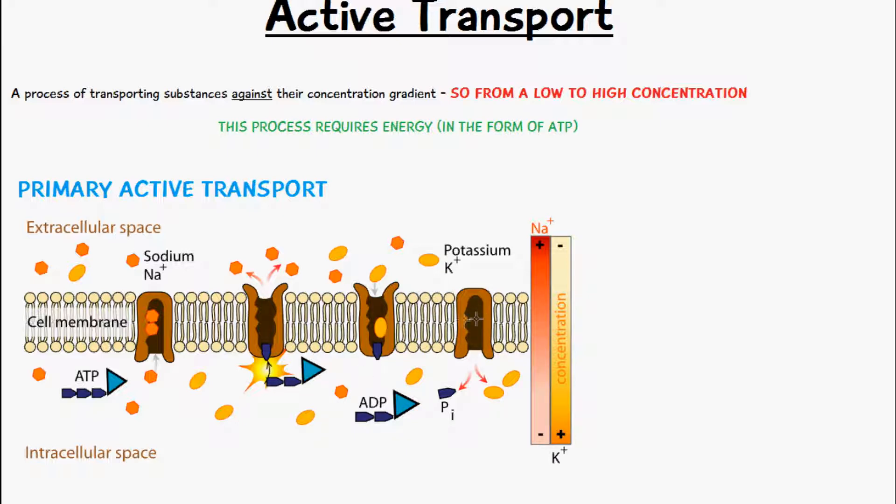When we're talking about active transport using this example, we have this pump here, which is a protein. It's a globular protein that's embedded and stuck inside the cell membrane. We have a low concentration of sodium inside the cell and a high concentration outside the cell.